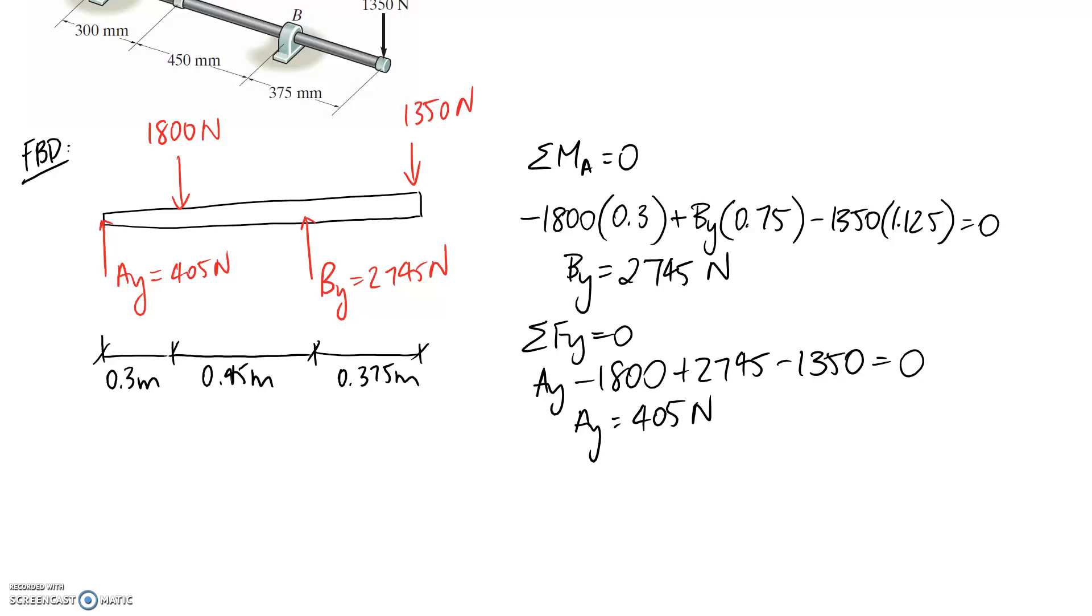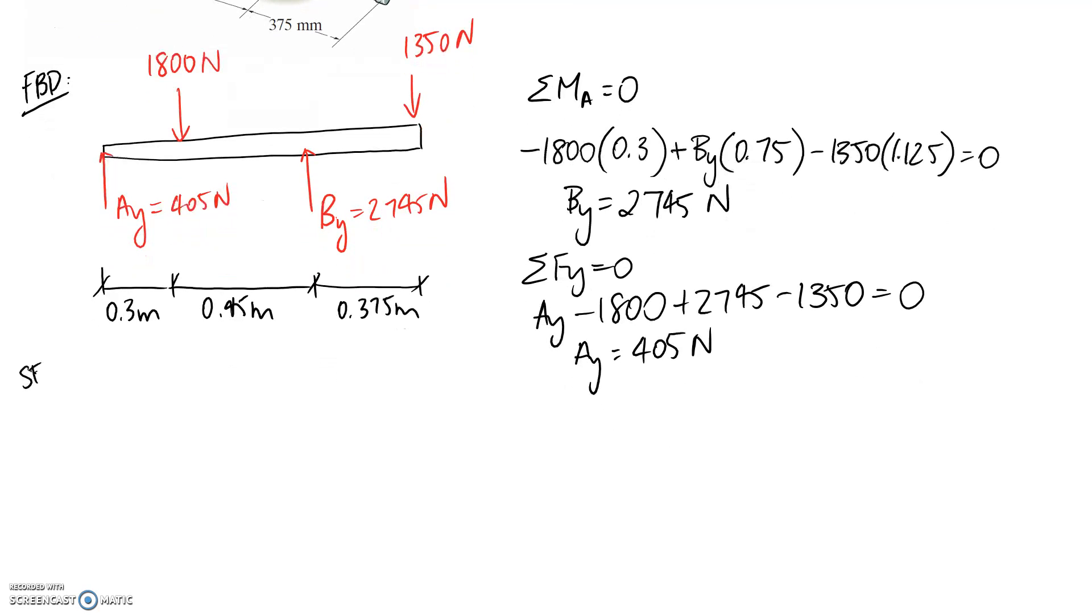So now we're ready to draw the shear force and bending moment diagrams. We'll start with the shear force one, and all my forces are in newtons, so my diagram is going to be in newtons. Starting at the beginning at 0, we're immediately pushed upwards 405. Nothing happens through here, so it's going to remain steady, and we're then pushed down 1800. So this is going to take us all the way down to be negative 1395. Again, nothing's happening through here, so we remain constant, and then we're pushed up 2745. So that's going to take us all the way back up again, and it corresponds to 1350. Nothing happens again through here, and then finally we're pushed down 1350, so that takes us back to 0. So that becomes our shear force diagram.